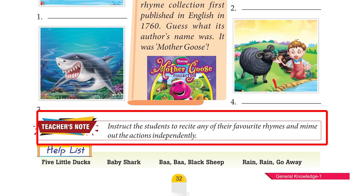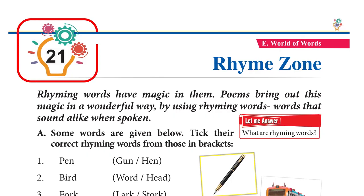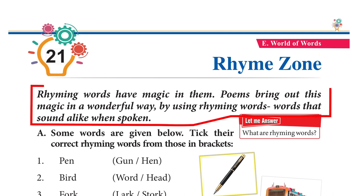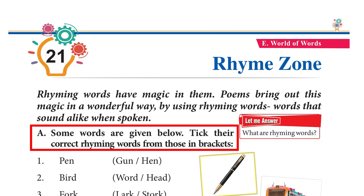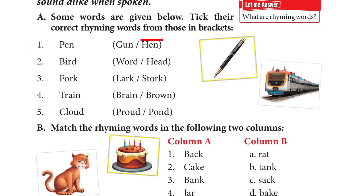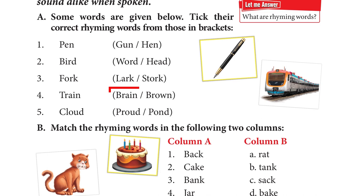Chapter 21: Rhyme Zone. Rhyming words have magic in them. By using rhyming words — words that sound alike when spoken. What are rhyming words? Take the correct rhyming words: pen/hen, bird/word, fork/stork, train/brain, cloud/proud. Match the rhyming words: back/sack, cake/bake, bank/tank, jar/far, cat/rat.